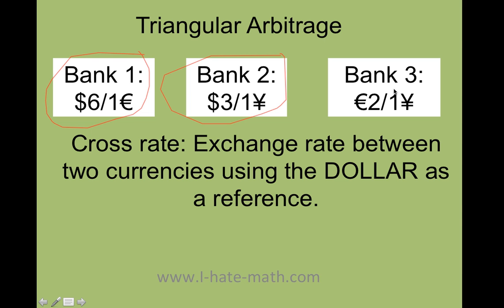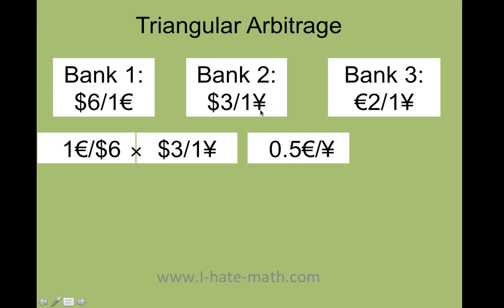The first step is to find what we call the cross rate. The cross rate is the exchange rate between two currencies using the dollar as a reference. You are in the United States reading the newspaper and you have dollars over euros and dollars over yen. The first step is to find the cross rate — since I'm comparing euros over yen, I need to do the same with bank one and bank two.